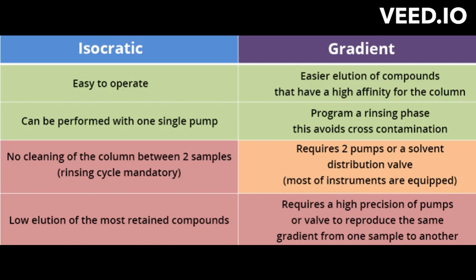Gradient HPLC, on the other hand, uses a varying composition of the mobile phase throughout the separation process. The composition of the mobile phase is changed by increasing or decreasing the proportion of one or more solvents in a programmed manner. This method is useful for the separation of compounds with different polarity, and allows a better resolution of the sample components. The separation is based on the interaction of the sample with the stationary phase and the changing polarity of the mobile phase. Gradient HPLC allows a better resolution of the sample components and is typically used for the analysis of complex mixtures.